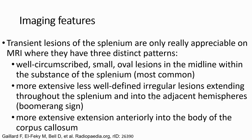Transient lesions of the splenium are best appreciated on MRI, where they have three distinct patterns. First, a well-circumscribed small oval region in the midline within the substance of the splenium — the most common pattern. Second, a more extensive region extending throughout the splenium and into the adjacent hemisphere — the boomerang sign.